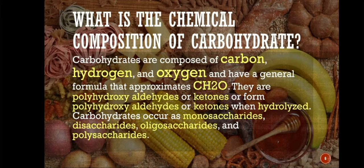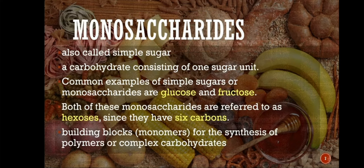Carbohydrates occur as monosaccharides, disaccharides, oligosaccharides, and polysaccharides. Monosaccharides are also called simple sugars — a carbohydrate consisting of one sugar unit. The common examples of simple sugars or monosaccharides are glucose and fructose. Both of these monosaccharides are referred to as hexoses since they have six carbons. These are the building blocks for the synthesis of polymers or complex carbohydrates.